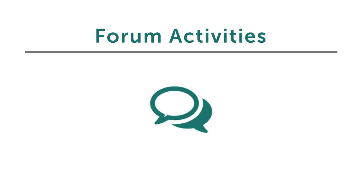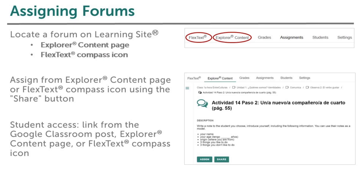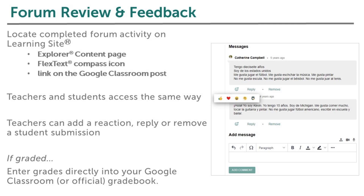Forum activities encourage interpersonal communication and build classroom community. You can assign a forum activity on Google Classroom just like you did with Task Activities from the Explorer Content page or the FlexText Compass icon. Select the Share button and follow the prompts. If you choose to share a forum activity on Google Classroom, you can review student submissions by accessing the forum through the link on the Google Classroom Post. You can also access it on Learning Site from the Explorer Content page or from the FlexText Compass icon. If you choose to grade the forum, you will enter your grades directly into your Google Classroom gradebook.